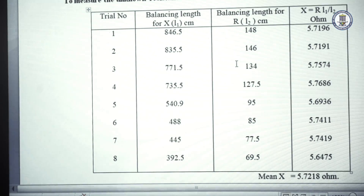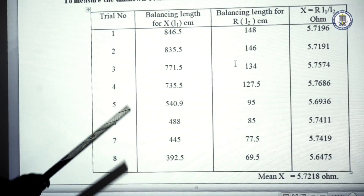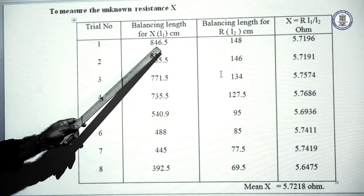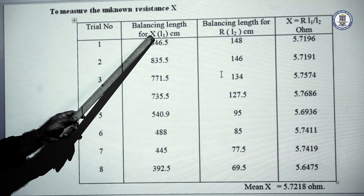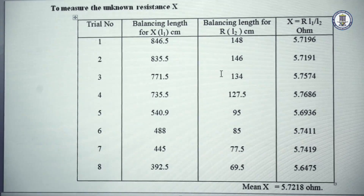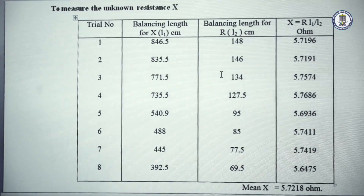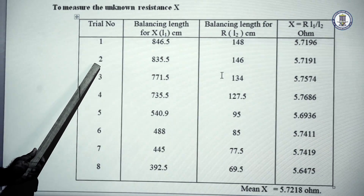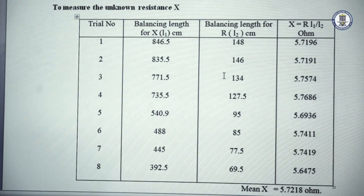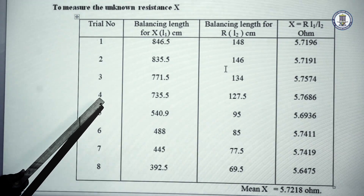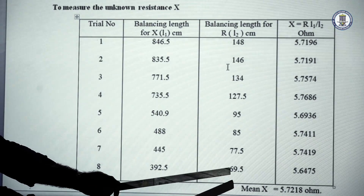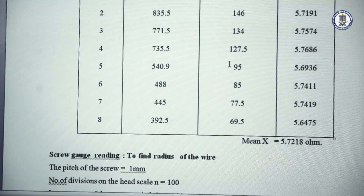From the observations, in the first trial the balance length for the unknown resistance x is l1 equal to 846.5 and l2 equal to 148, giving x equal to r times l1 divided by l2, which is 5.7196 ohms. In the second trial, the balance lengths are 835.5 and 146 giving x as 5.7191. After repeating the experiment eight times, the mean value of x is obtained as 5.7218 ohms.